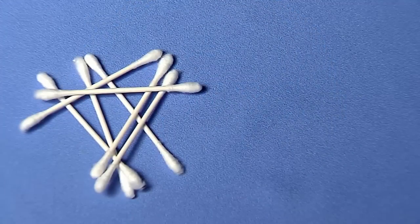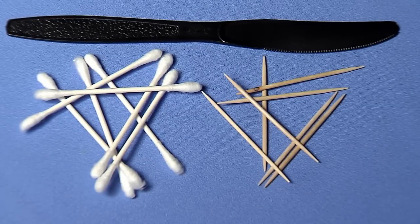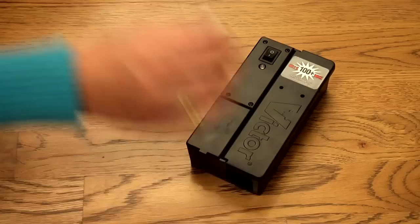Be sure to use a q-tip, toothpick, or another tool to bait so your scent is not transferred onto the trap. Close the lid on the electronic mousetrap.